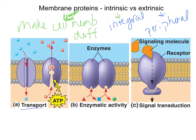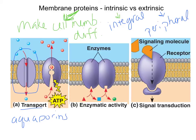The first type is transport proteins, which transport things across the phospholipid bilayer. An example is an aquaporin — a channel for water. Water is polar and is attracted to the charged phospholipid head, but the large hydrophobic region in the middle kicks the water back out, forming the barrier. Water must get in and out of the cell, so it moves easily through these aquaporin channels. You also have what looks like a sodium-potassium pump here, moving things back and forth across the membrane.